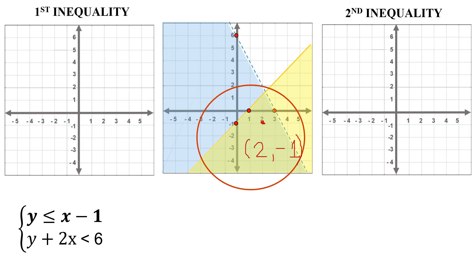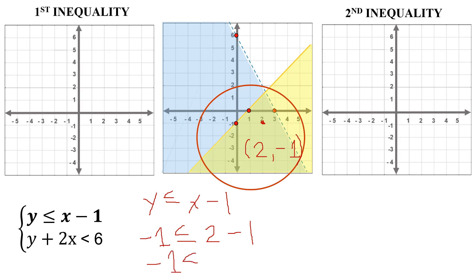We will substitute this point to check if it is really a solution. For the first inequality, y less than or equal to x minus 1: substitute y as negative 1 and x as positive 2. Negative 1 less than or equal to 2 minus 1, which gives positive 1. Is negative 1 less than positive 1? Yes, that's correct, so this point is a solution of the first linear inequality.